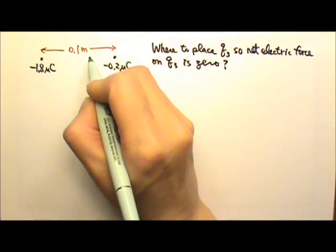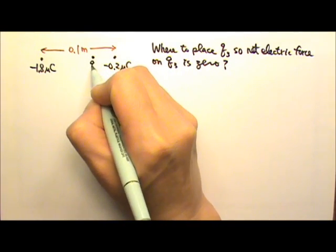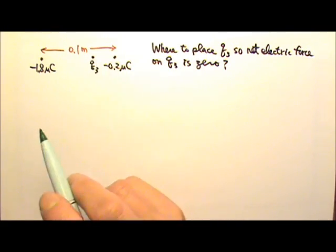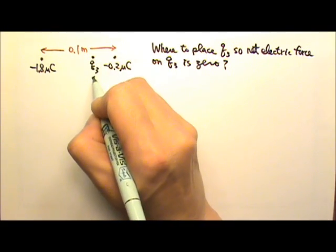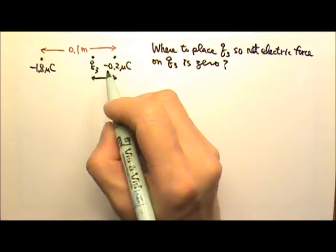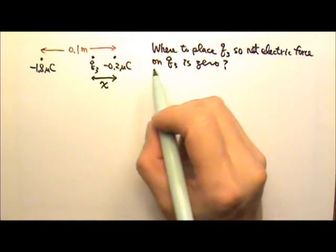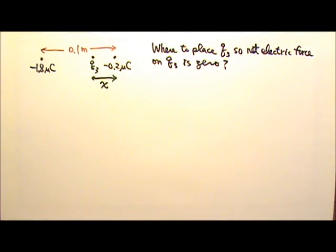So let's say we're putting Q3 right here in region 2 and closer to the weaker charge. And let's say the distance between these two is x, and let's find x so we can find the exact location to place Q3.